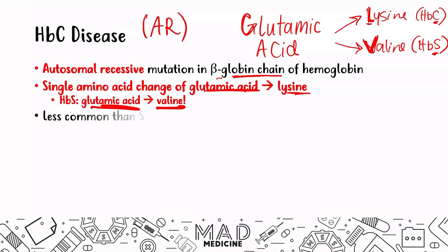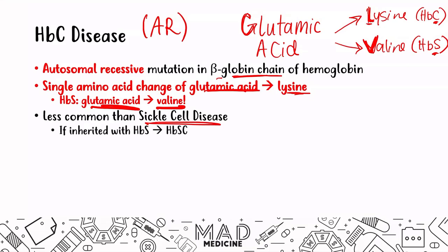HbC is less common than sickle cell disease — you're going to have less HbC than HbS in general. It can be inherited with sickle cell disease because they occur at the same location, and you can have HbSC as well. This is going to be milder than sickle cell disease.